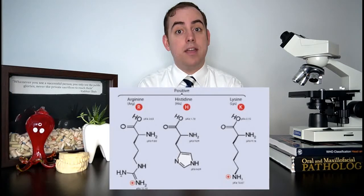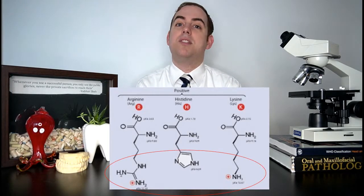Eosin, on the other hand, is an acid, meaning it is negatively charged and attracted to positively charged ions. In the cell, this is often a protein. Proteins are comprised of amino acids, and amino acids are often positively charged due to their side chains. This means that extracellular proteins, collagen, and many other proteins in the body are going to look red when stained with hematoxylin and eosin.